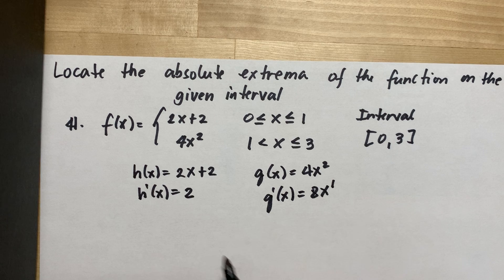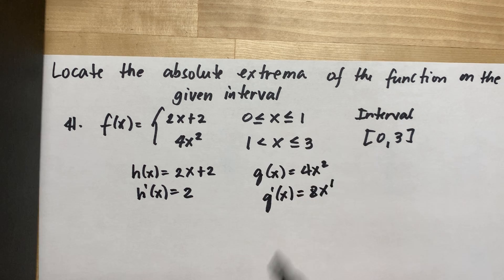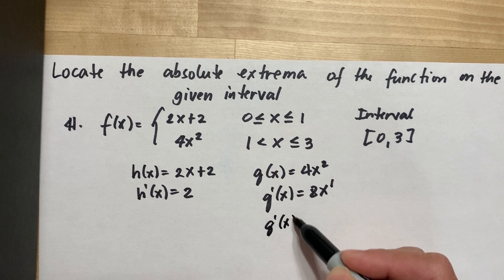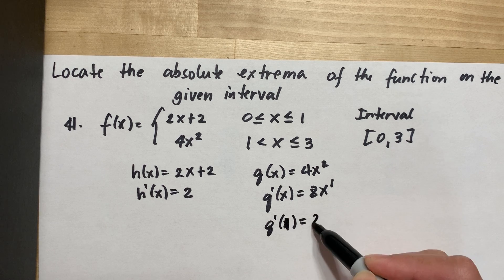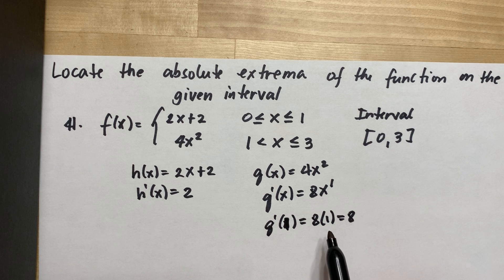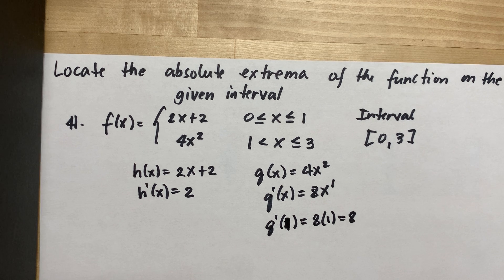As you can see, we will not have the same derivative at x equal to 1. The first derivative is 2, and the second derivative, if x is equal to 1, will be 8 — since 8 multiplied by 1 is 8 — meaning the graph of the derivative doesn't meet at one point. You might say the derivative doesn't exist, so there will be no absolute extrema, but that is wrong.